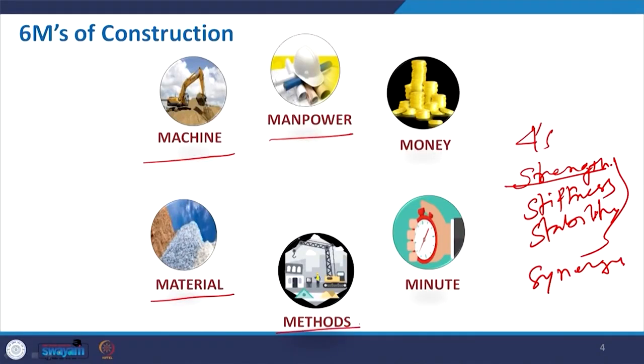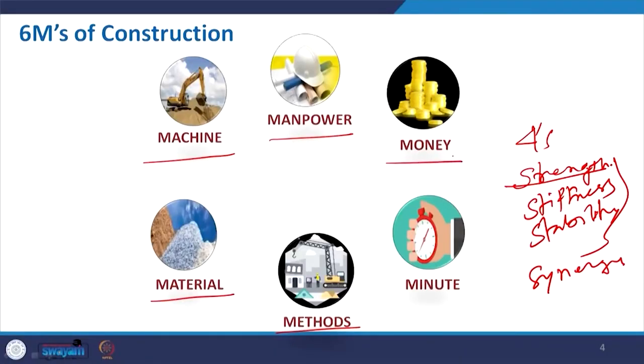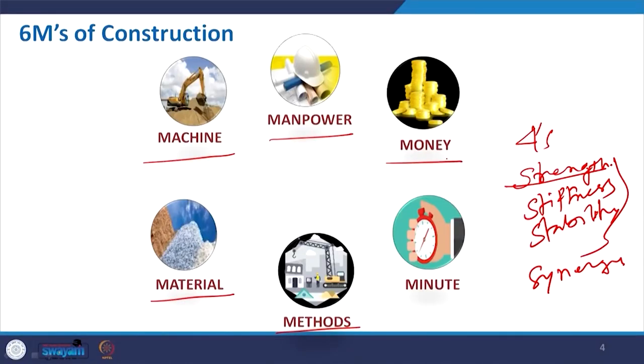Another factor is the methods — how you will do it, whether you will make it on site, which is many times referred to as cast-in-situ. Nowadays we can also go for prefabrication — we make off site and then plug it in. That is a plug-and-play concept. Money is very important: if you do not have money, we can only imagine, we cannot really bring that into reality. What we visualize to be built also needs some investment.